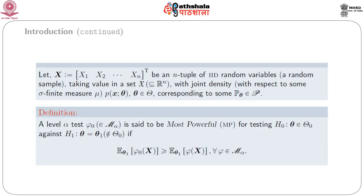Actually, p(x|theta) is the probability density function or probability mass function of the set of random observations x. p(x|theta) may correspond to the distribution of a discrete or continuous random variable. In any case, p(x|theta) is nothing but the probability density function or probability mass function. Now, we want to give the definition of the most powerful test.